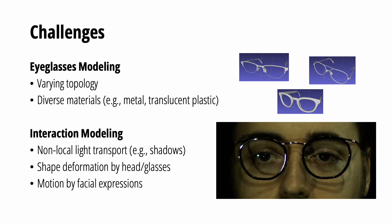Also, the physical contact of face and eyeglasses will cause deformation and motion to each other. In this paper, we introduce a generative model to support photorealistic rendering with topological change. We also propose the joint modeling of eyeglasses and face to incorporate geometry and photometric interactions.